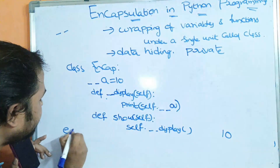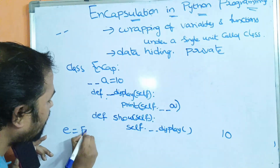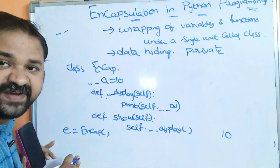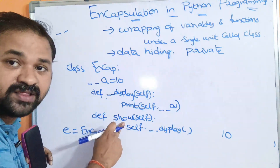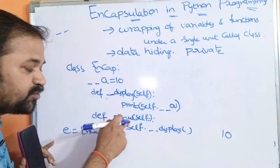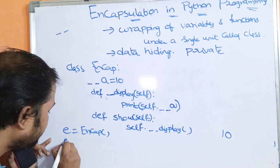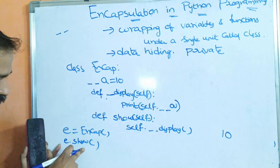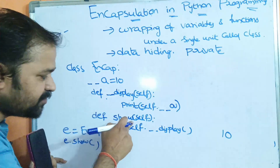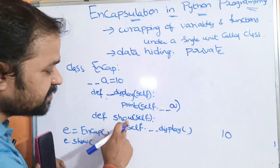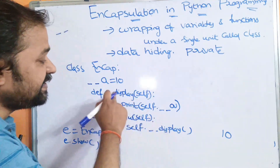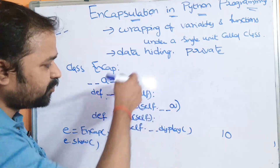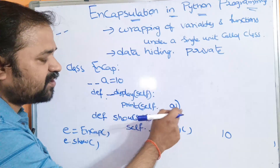From this public function, we call the private function — self.__display. We can call a private member function from the public member function of the same class, so there is no problem. Now, from outside the class, let us create the object — e is equal to ncap. Now, we have to call the public member function show — e.show. Whenever this statement is executed, control goes to the show function. From the show function, we call the private display function. Control goes to the display function and print of self.a.